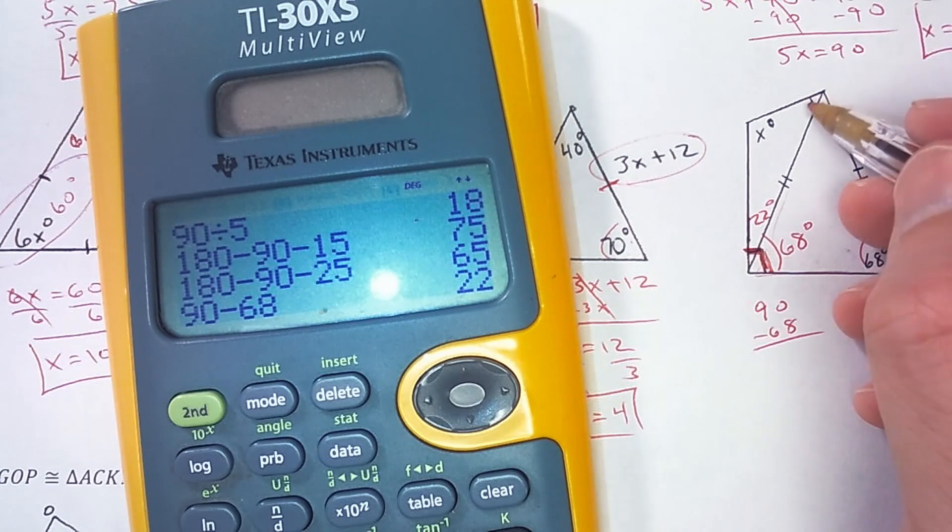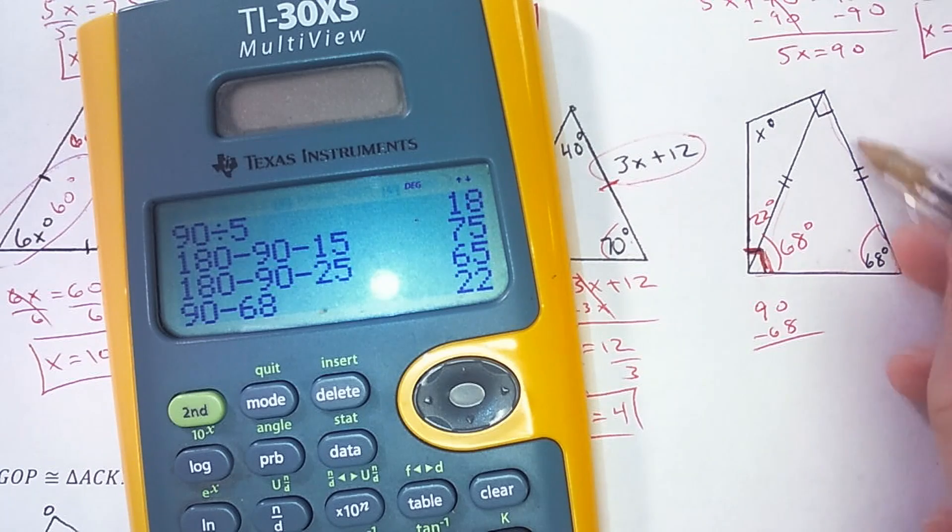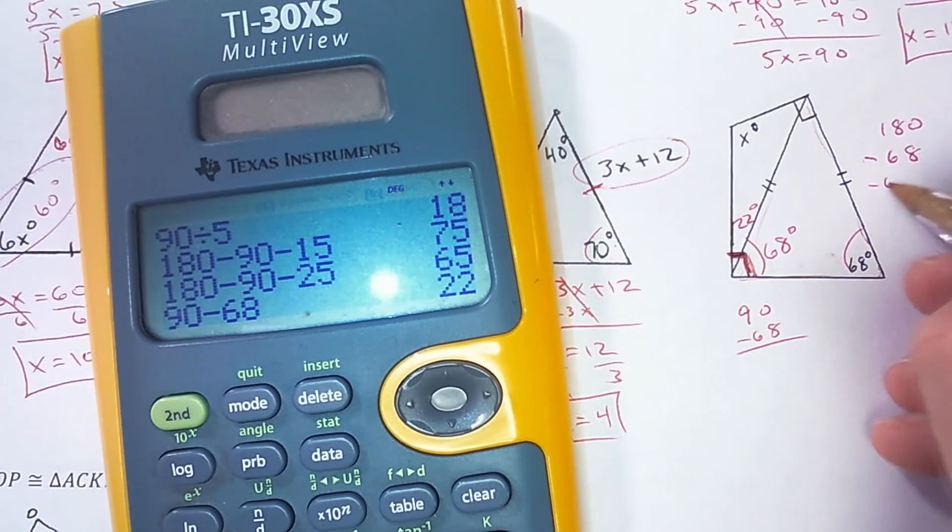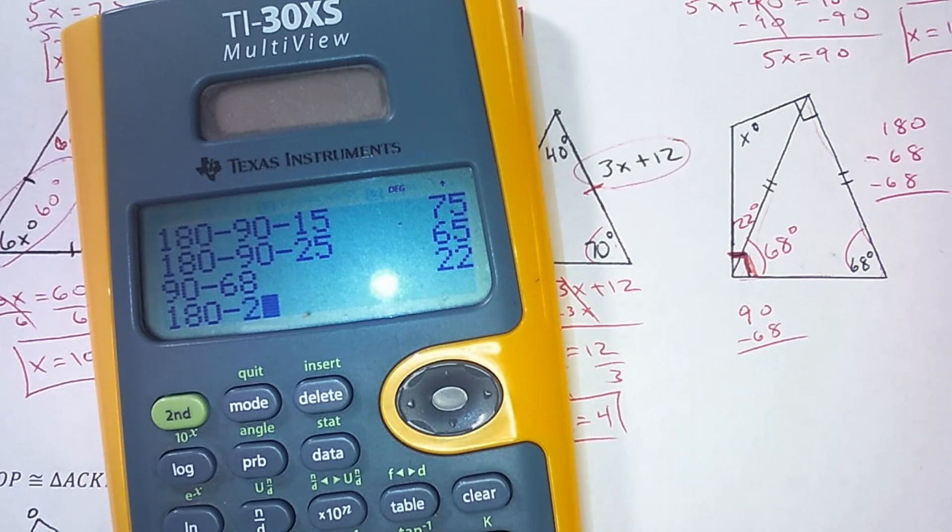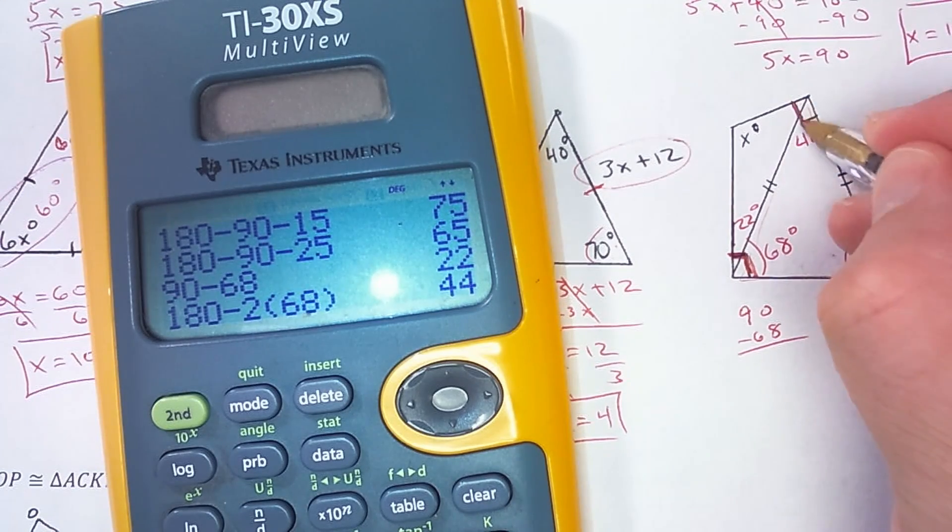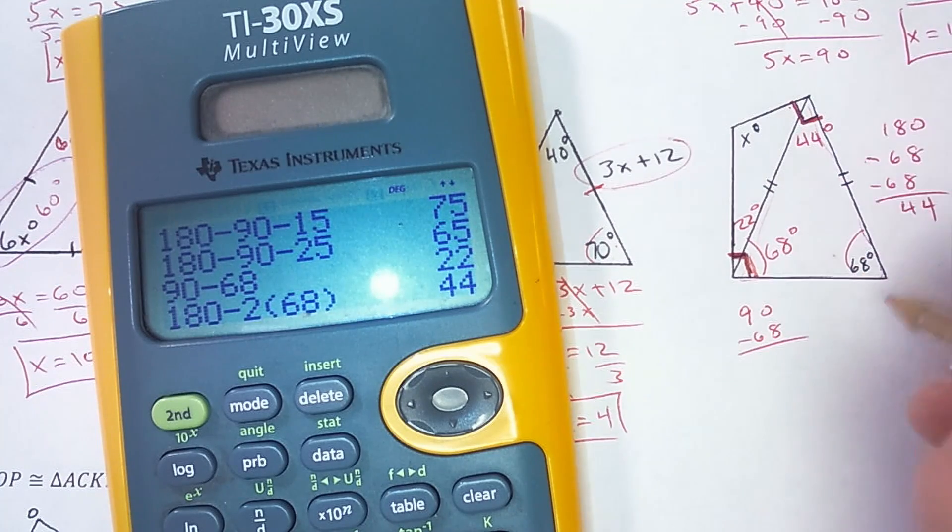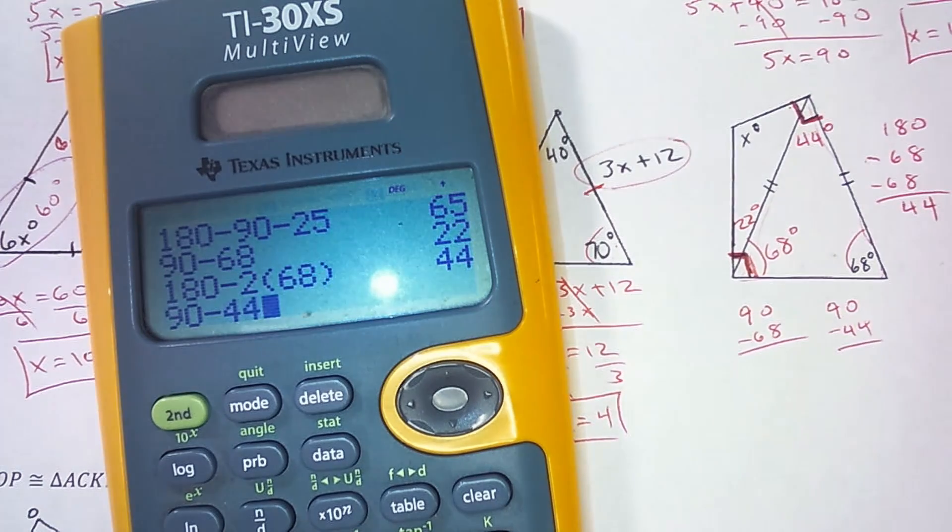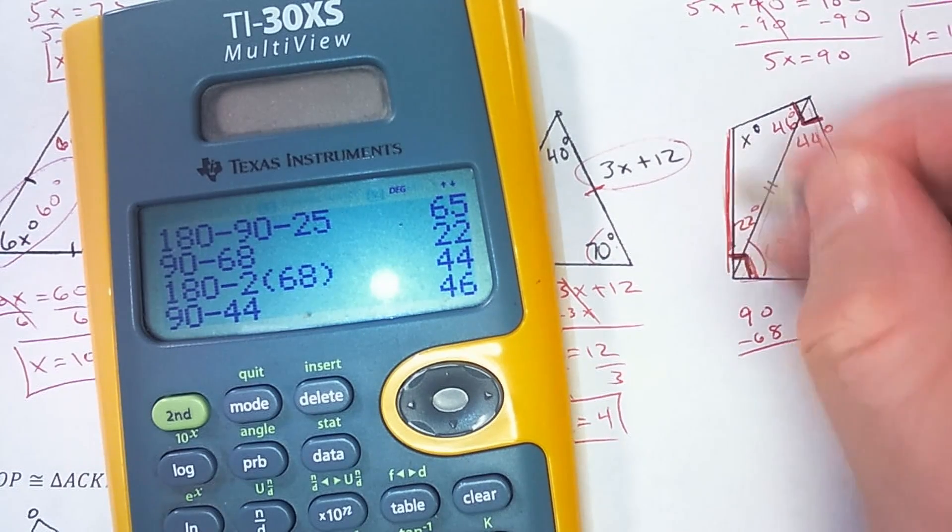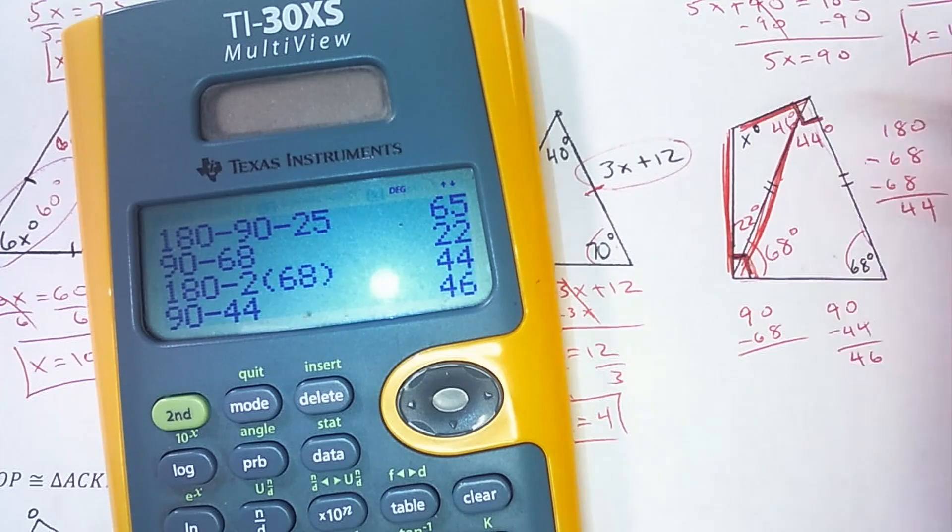Now I need to find this one up here. So in this isosceles triangle, I can subtract the two 68s from 180. So 180 minus 68 minus 68. So 180 minus 68 is 44. So this right here is 44 degrees. Combined, these two angles right here make 90. So if I do 90 minus 44, I get 46. So this is 46 degrees. And now I can focus on this triangle up here.